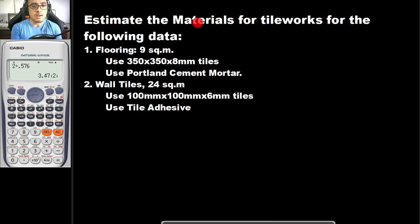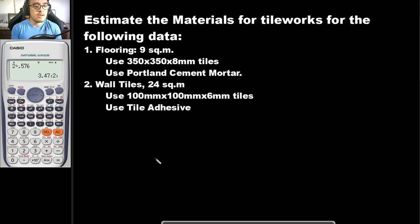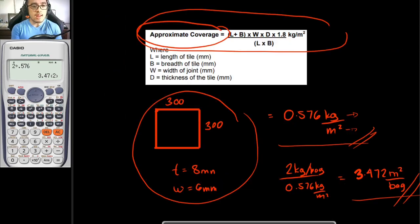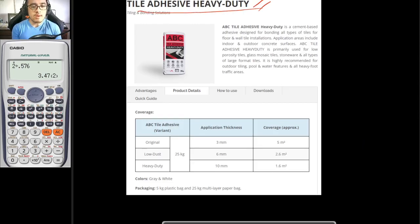Let's have an example. Estimate the materials needed for tile works for the following data. For flooring: the total area is 9 square meters, using 350 by 350 by 8 mm tiles, with Portland cement mortar as the bond. For number 2, wall tiles: approximately 24 square meters, using 100 mm by 100 mm by 6 mm tiles, with tile adhesive. Since the brand is not specified, we will use the ABC data.